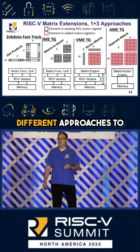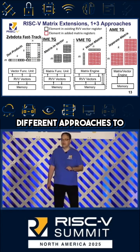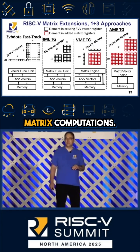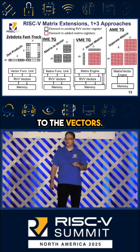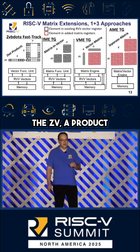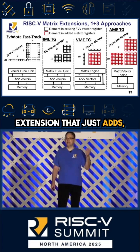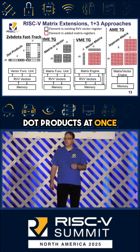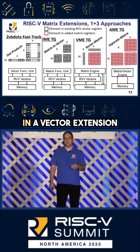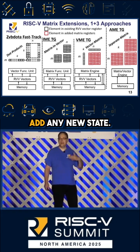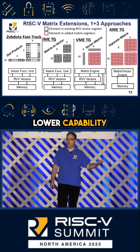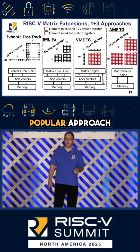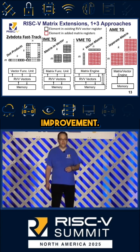We actually have four different approaches to accelerating matrix computations. The first one is really an extension to vectors, so it's kind of in a different category — the zv.a.product extension — which adds the ability to do multiple dot products at once, long dot products in a vector extension. It doesn't add any new state and it's actually very efficient, and for lower capability systems we think this is going to be a very popular vector approach to get a high throughput improvement.